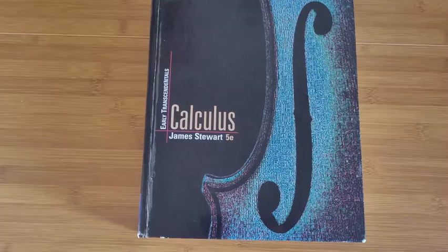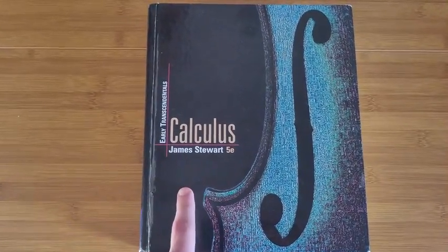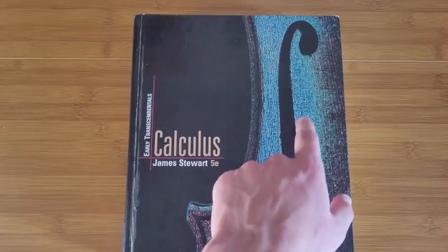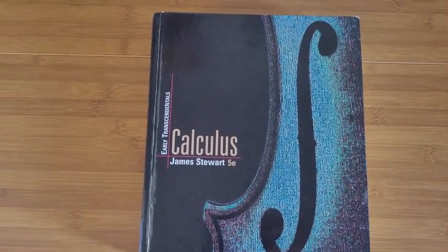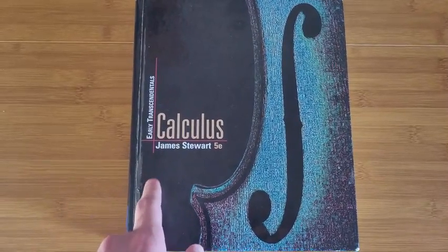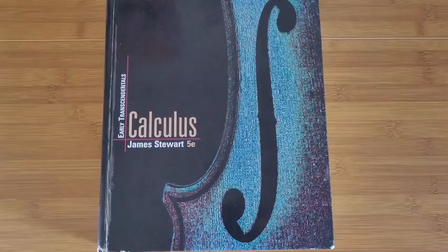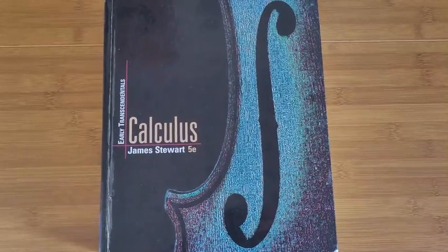There's two versions here. There's the Early Transcendental version, and there's also the regular one. I believe the regular one has a red color to it, and then the Early Transcendentals is obviously this blue coloring. And the only difference is Early Transcendentals introduces transcendental functions just earlier in the book. And so it really doesn't matter which version of the book you get.